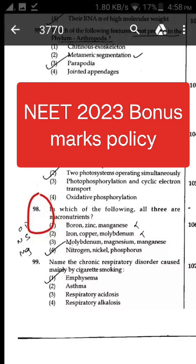However, if any anomaly or discrepancy is found after the process of challenges of the key verification, it shall be addressed as follows: correct answer or most appropriate answer receives four marks (+4); any incorrect option marked will be given minus one mark (-1); unanswered or marked for review will be given zero marks (0). If more than one option is found to be correct, then four marks (+4) will be awarded to only those who have marked any of the correct options.